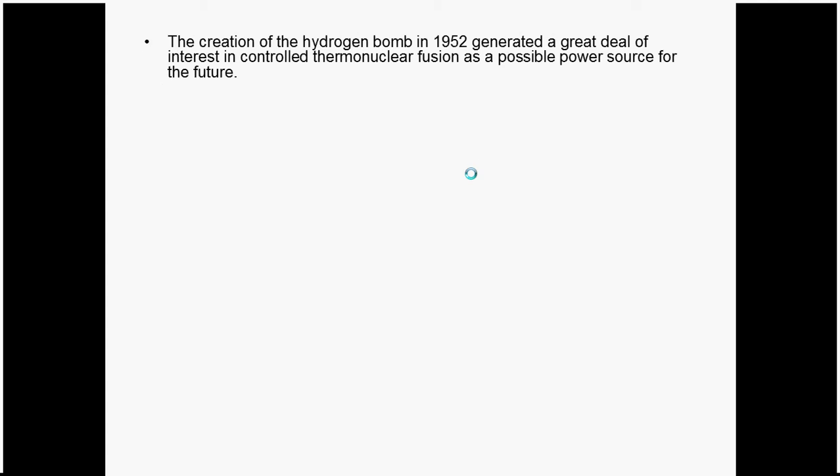The creation of the hydrogen bomb in 1952 generated a great deal of interest in controlled thermonuclear fusion. The thermonuclear bomb was created by a fission bomb — where heavy particles break apart and create energy — and the energy from this fission bomb was then focused into a target of hydrogen or lithium, causing confinement of those particles while huge energy was given to them, leading to fusion.